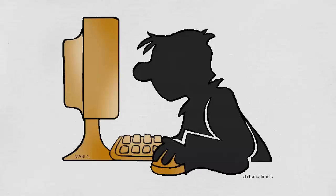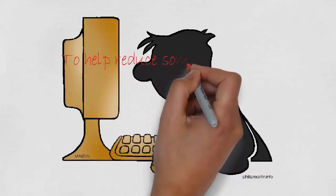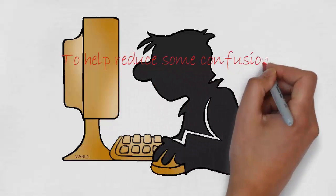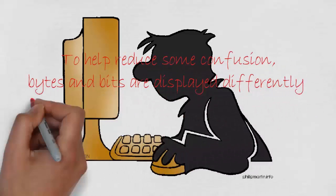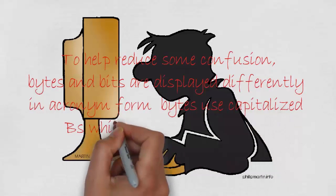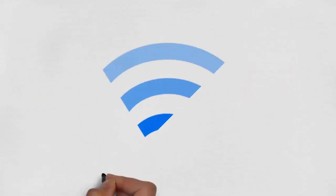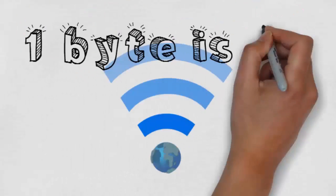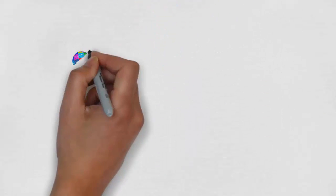To help reduce some confusion, bytes and bits are displayed differently in acronym form. Bytes use a capital B and bits use a lowercase b. So one byte is written as one capital B, and one bit is written as one small b.